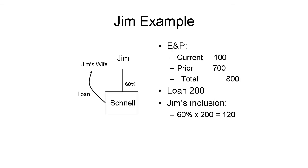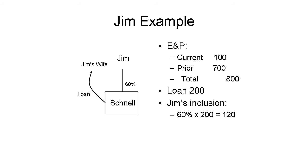Let's look at an example. Jim, an American, owns 60% of Schnell GmbH, a German corporation treated as a corporation for U.S. tax purposes. Schnell has 2016 earnings of 100 euros and prior year earnings of 700 euros. On January 30, 2016, Schnell loaned 200 euros to Jim's wife, who is also an American, at arm's length terms repayable in 2017. At the end of each quarter, Schnell had an investment in U.S. property of 200 euros.